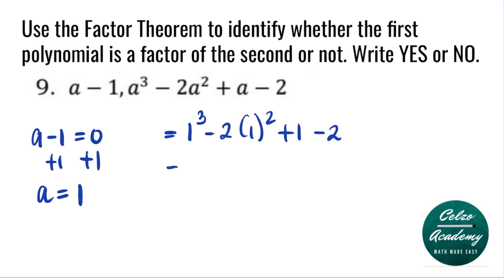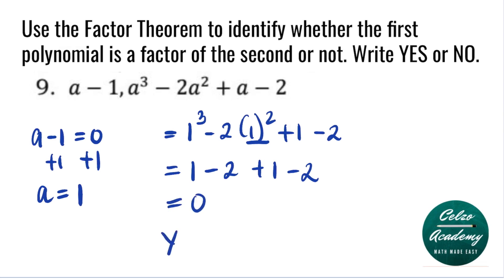Simplifying: 1 to the third is 1. 1 squared is 1 times 2, so we have minus 2, plus 1 minus 2. The answer is 0. This means that a minus 1 is a factor of the second polynomial.